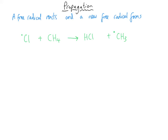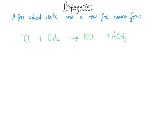In the first propagation stage, a chlorine free radical — very reactive — tears away one of the hydrogen atoms from the methane and turns into hydrogen chloride, a stable compound. What that leaves is a methyl free radical: a carbon atom with an unpaired electron on it. So we've used one free radical and made a different, very reactive free radical, which goes on to react in stage two.